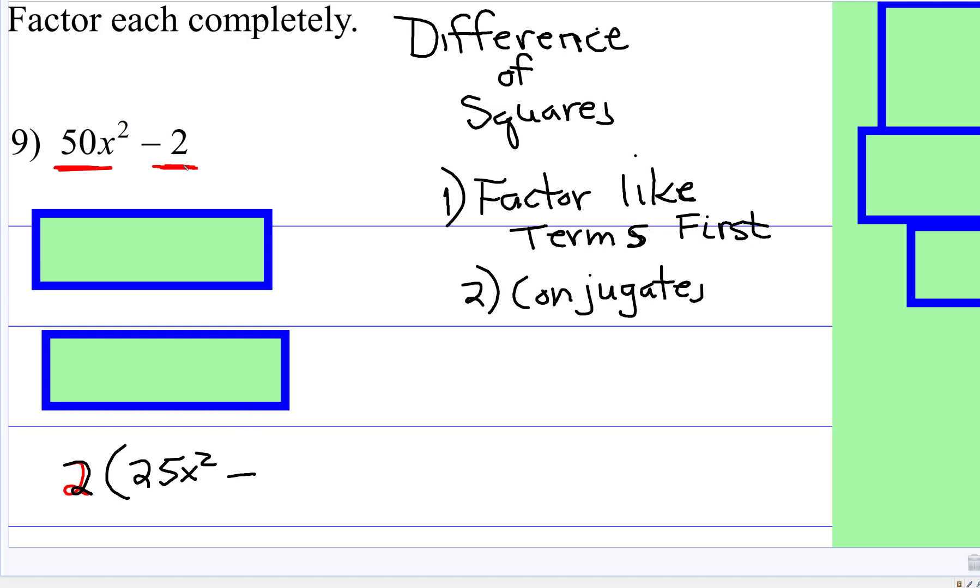Do not make this mistake by saying, oh well, two and two cancel out to be zero. Do it this way, two divided by two is one.